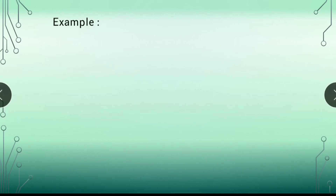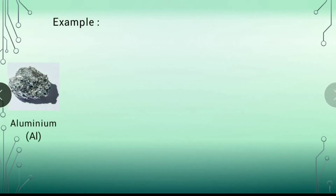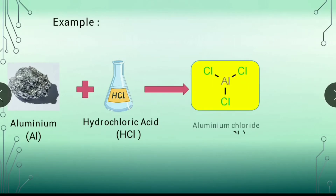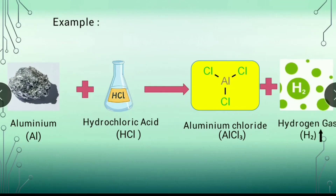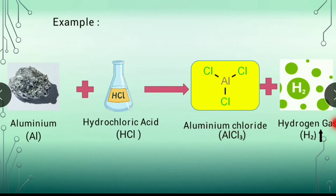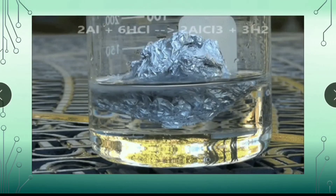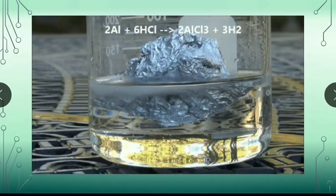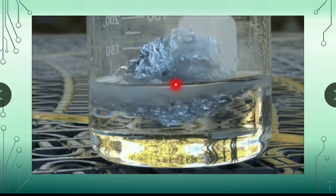Now let's see the reaction of aluminium with acid. When aluminium reacts with dilute hydrochloric acid, it gives aluminium chloride plus hydrogen gas. Al plus HCl gives AlCl3 plus H2 gas is released. You can see H2 gas is evolved here.